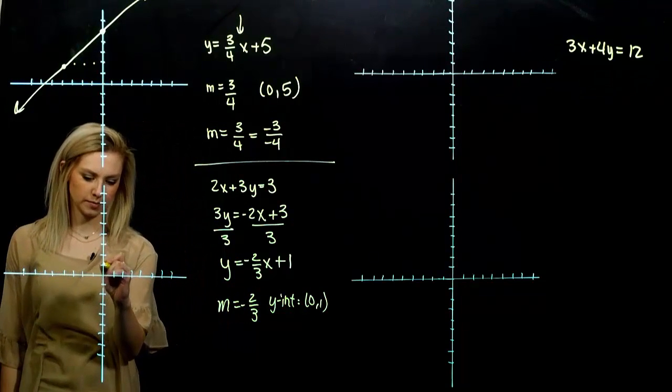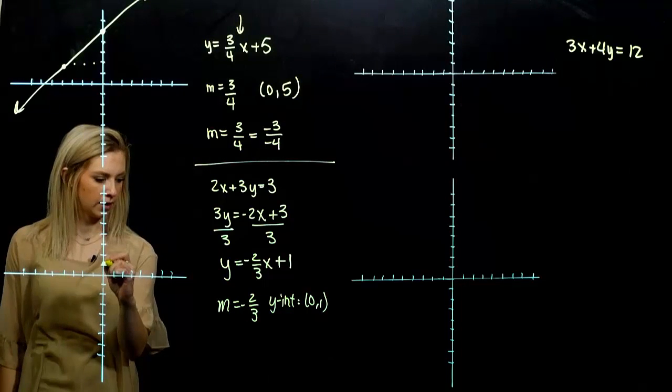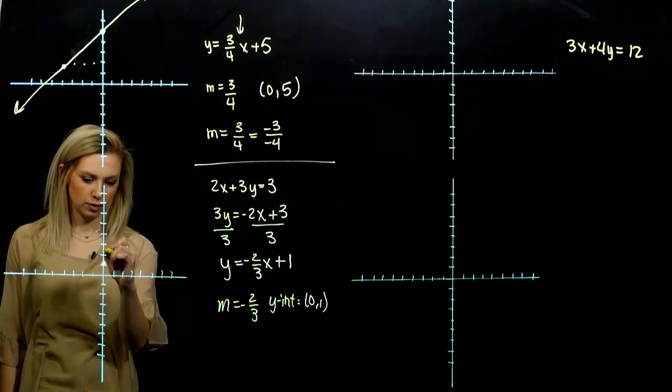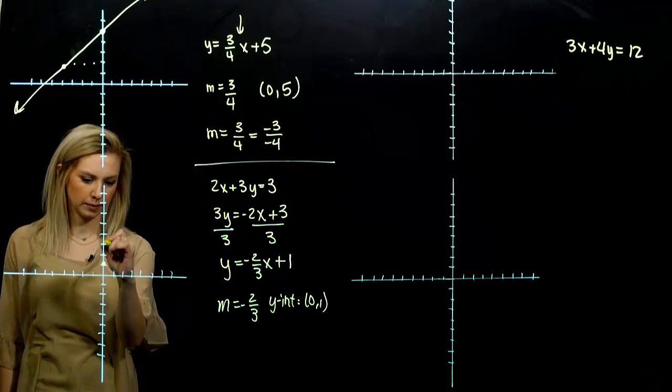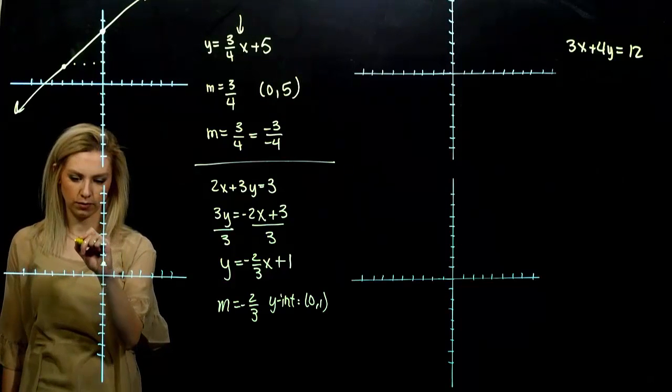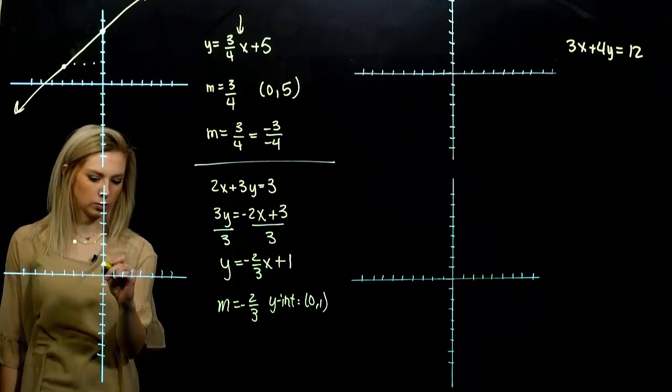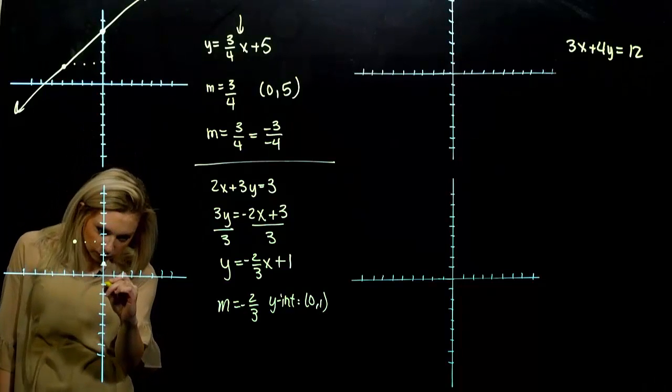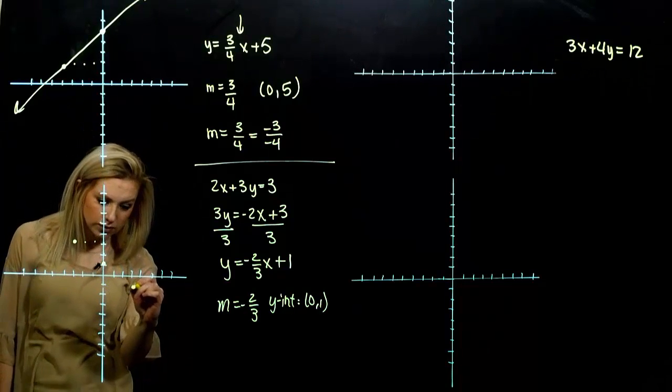Let's plot. Zero, one is my y-intercept. From there, I am going to rise two and fall back one, two, three. Or I could have done what? Fall two, run one, two, three. It will also fall on the line.